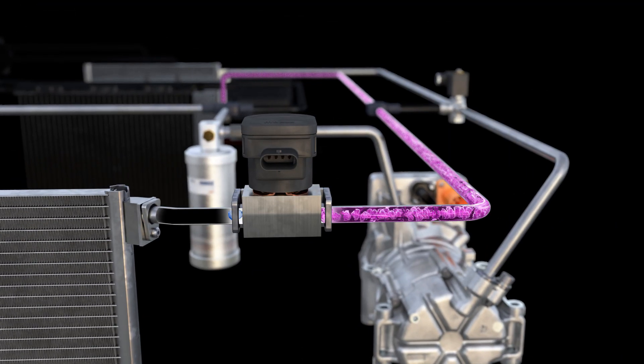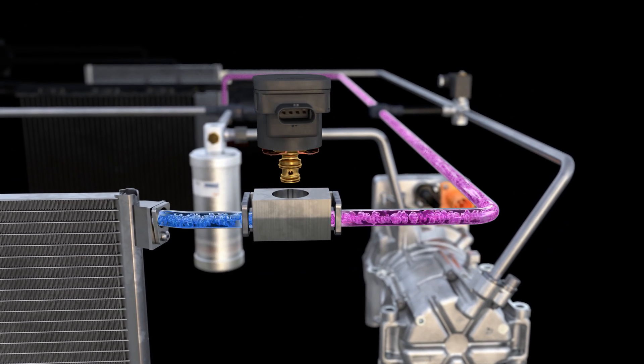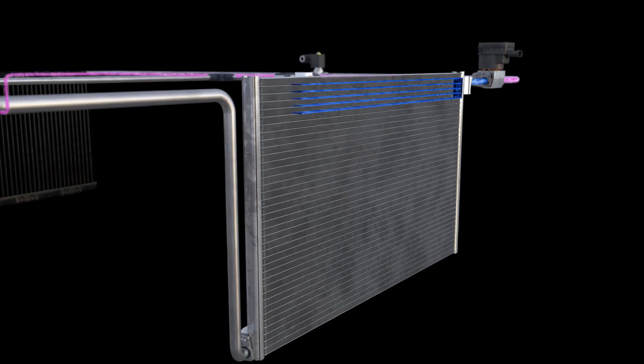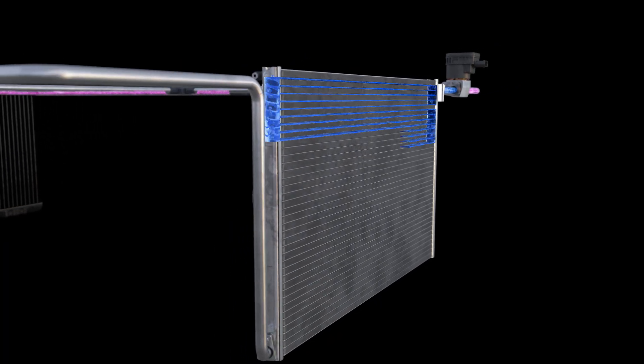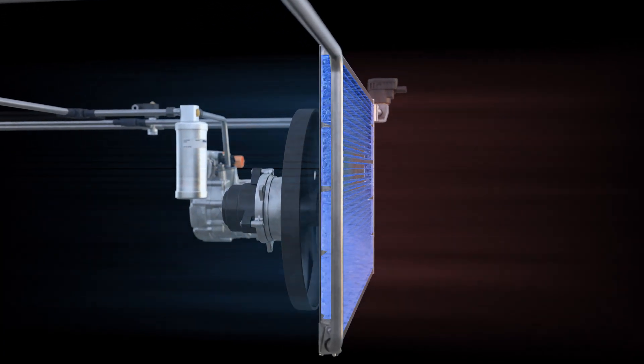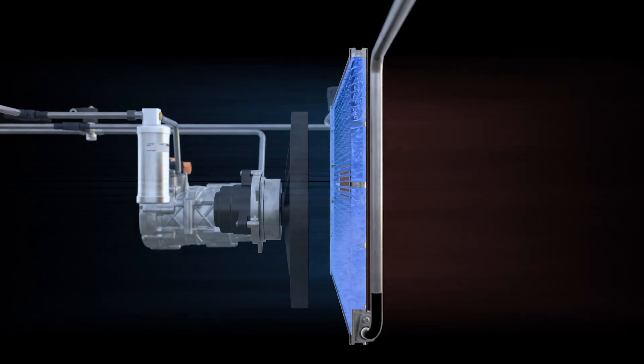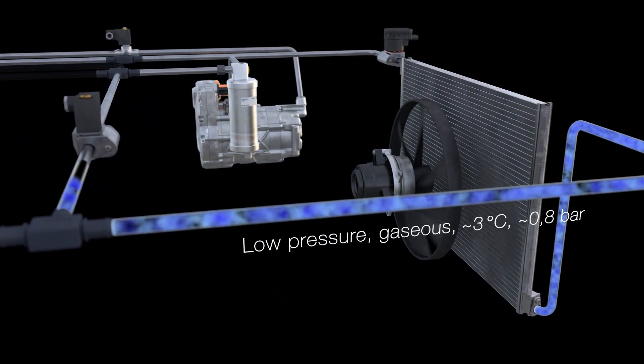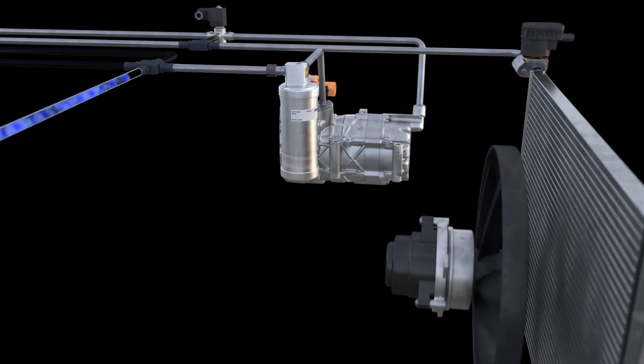Before that, however, it must pass through another expansion valve. Here too, the small controllable opening causes a pressure drop. The condenser at the front of the vehicle now functions as an evaporator, meaning that it turns the refrigerant back into a gas that extracts thermal energy from the surroundings. The gas is now fed back to the compressor again via the filter dryer.